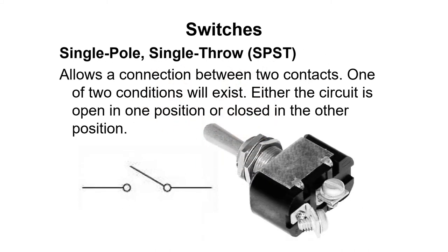A single pole single-throw switch is a simple on-off switch for one circuit. Flipped one way, the circuit is open or off. Switched the other, it is closed or on.